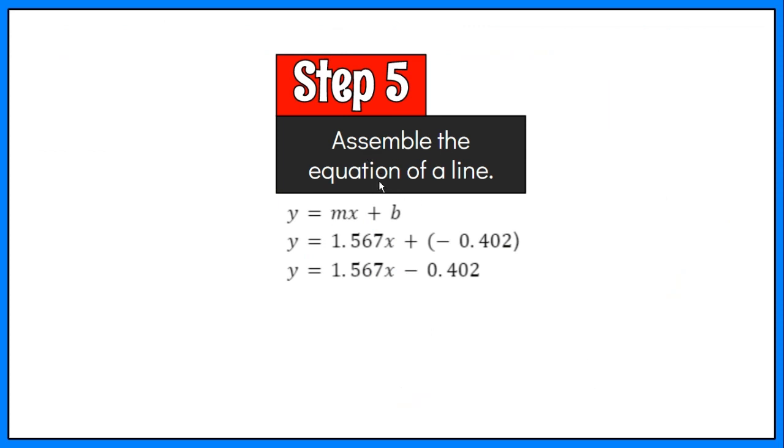Step 5: Assemble the equation of a line. We now know that the m is 1.567 and b is negative 0.402. Therefore, this is our equation.